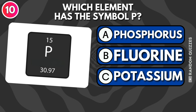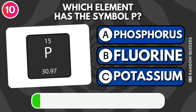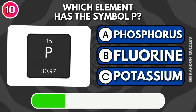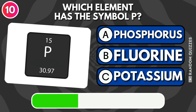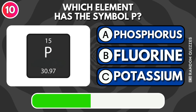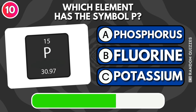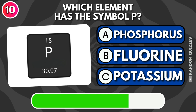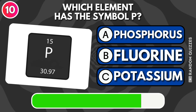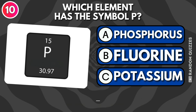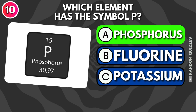Which element has the symbol P: phosphorus, fluorine, or potassium? Answer: Phosphorus.